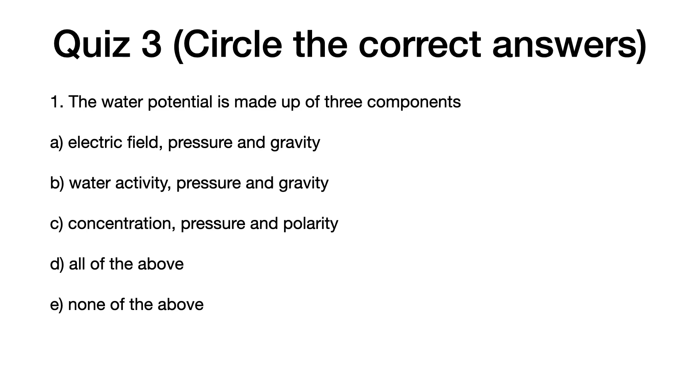One, the water potential is made up of three components. A, electric field, pressure and gravity. B, water activity, pressure and gravity. C, concentration, pressure and polarity. D, all of the above. E, none of the above.